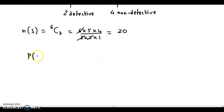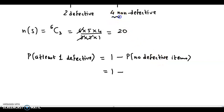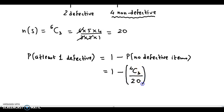Simplifying 6C3: 6 into 5 into 4 divided by 3 into 2 into 1 gives us 20. So n of S is 20. The probability asked is of getting at least 1 defective item. We know that probability of at least 1 defective item equals 1 minus probability of no defective items.